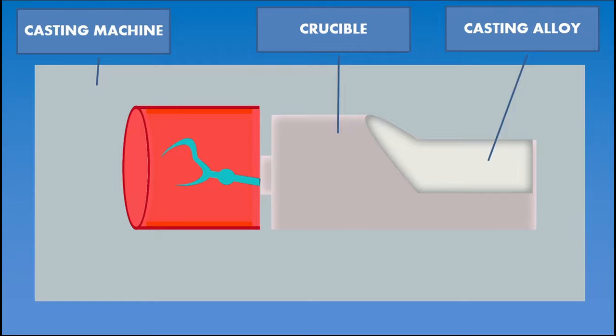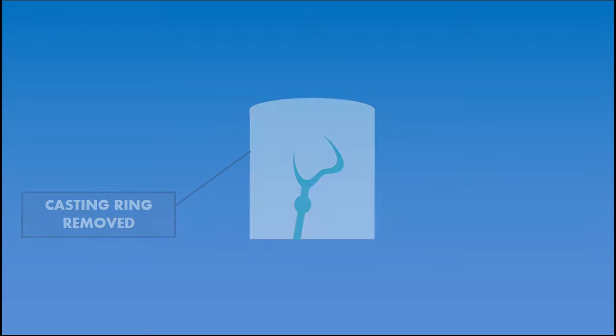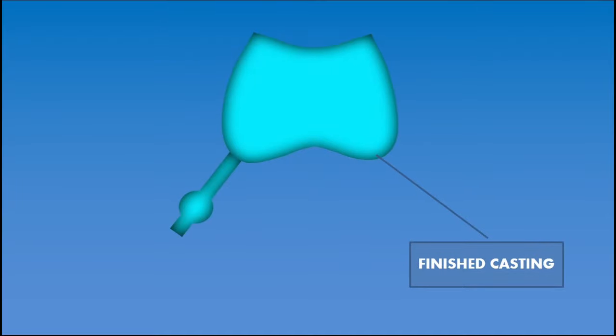After the completion of the casting, the entire setup is allowed to cool to room temperature. The casting ring is removed followed by retrieval of the casting from the investment. The attached sprue former is removed by sectioning and all the impurities, especially the investment which is present on the surface, must be cleaned. This can be done easily with the help of sandblasting. The retrieved casting is then finished and polished. The fit of the casting is verified in the die. Once it is perfect, it can be tried in the patient's mouth and cementation can be done.